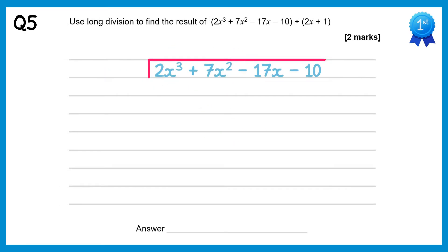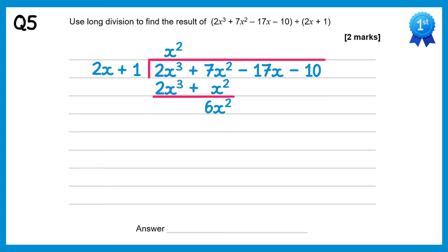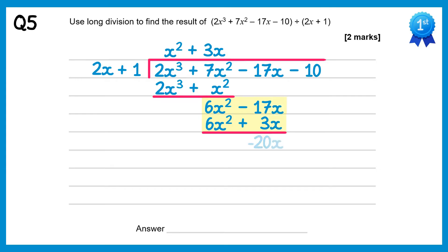Inside the bus stop goes the cubic and outside the linear term. Do 2x cubed divided by 2x which is x squared. Multiply x squared back through: x squared times 2x is 2x cubed, x squared times 1 is plus x squared. Now subtract: the 2x cubes will cancel and 7x squared take away x squared is 6x squared. Bring down the next term, negative 17x. We've got 6x squared divided by 2x which gives positive 3x. Multiply 3x back through: 3x times 2x is 6x squared, 3x times 1 is plus 3x. Subtract: the 6x squareds will cancel, negative 17x take away 3x is negative 20x.